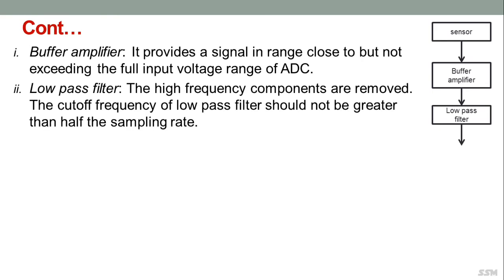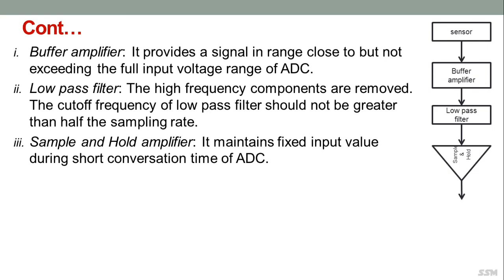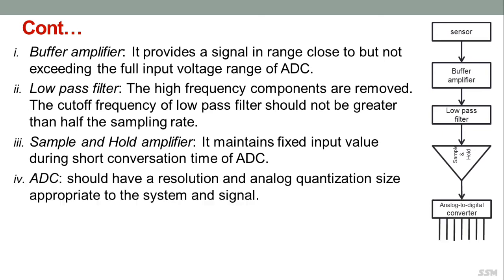The low pass filter is necessary to remove undesirable high frequency components in the signal that could produce aliasing. The cutoff frequency of the low pass filter should not be greater than half the sampling rate. The output of the low pass filter is fed to a sample and hold amplifier, which maintains a fixed input value during the short conversion time of the ADC. The output of the sample and hold is then fed to the analog to digital converter.